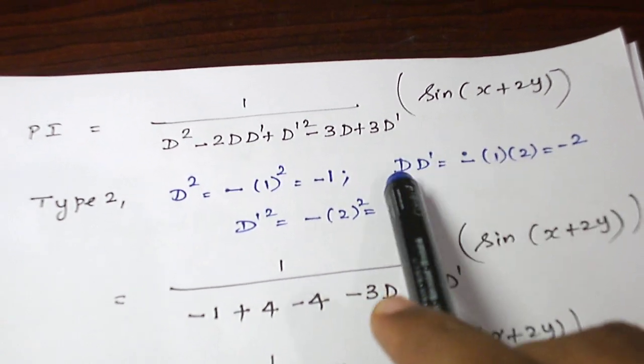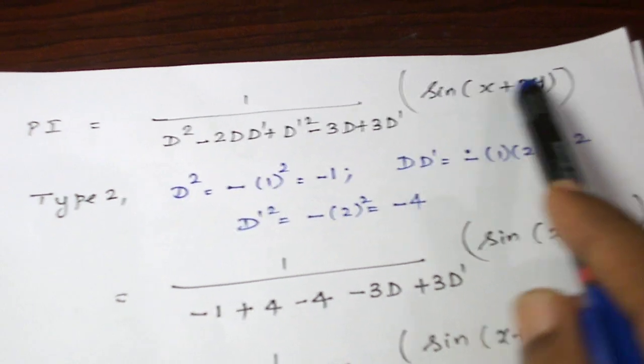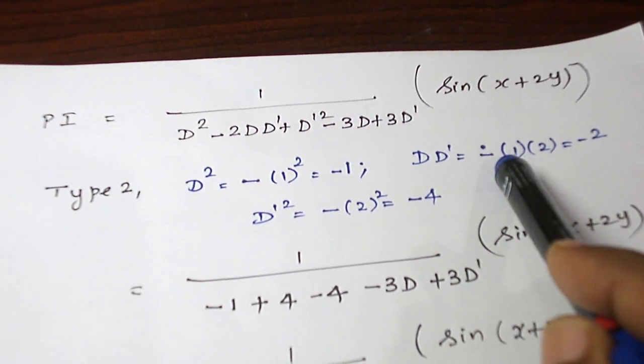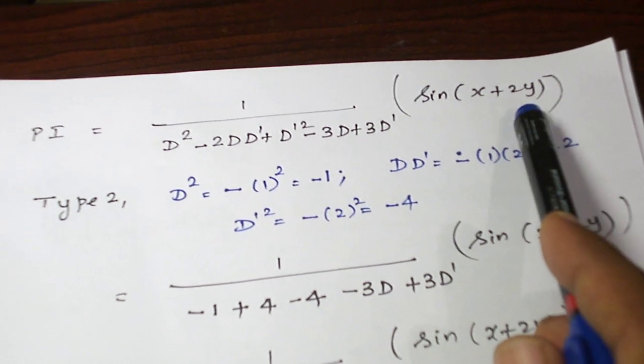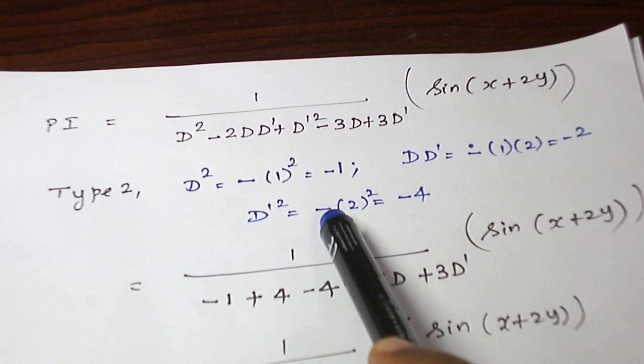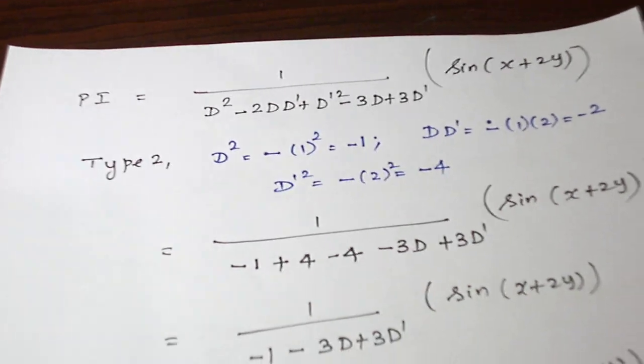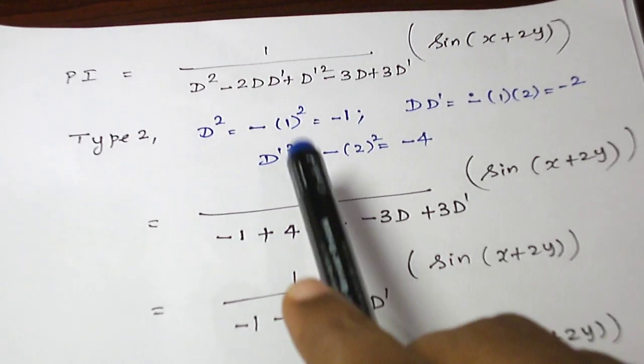That's for d square. For d d dash, multiply x coefficient on y coefficient and put a negative sign, minus 2. For d dash square, take the y coefficient, square it and put a negative sign. So minus 4. So when we apply all these things, we will get and simplify minus 1 minus 3d plus 3d dash of sine of x plus 2y.